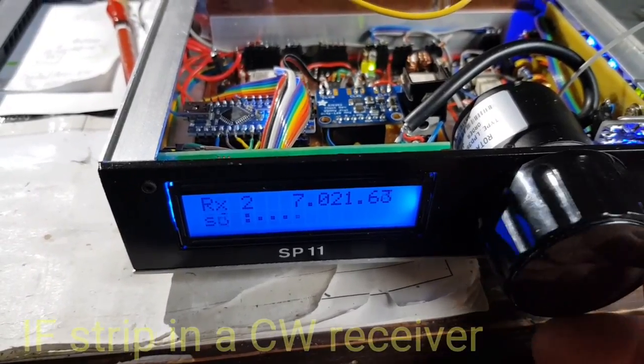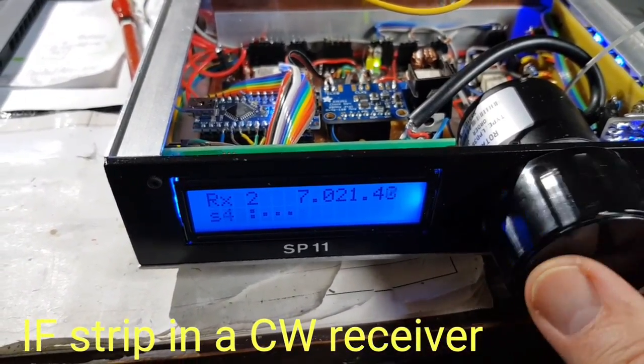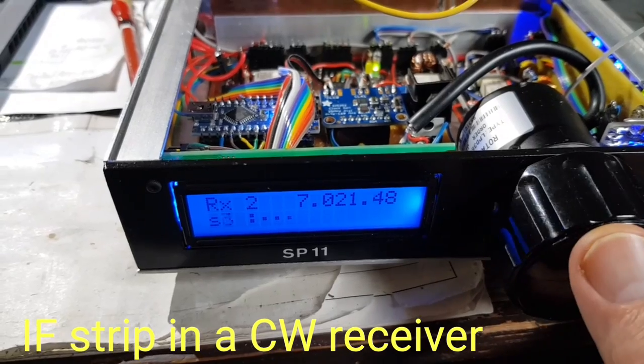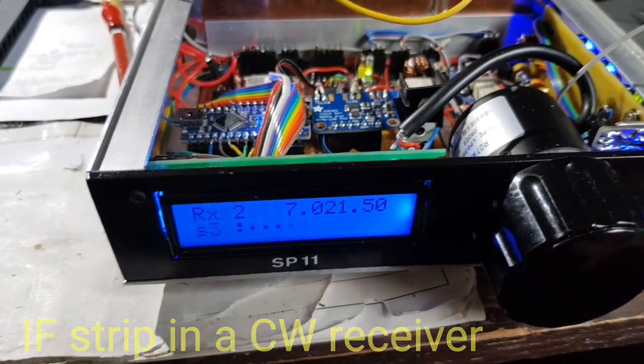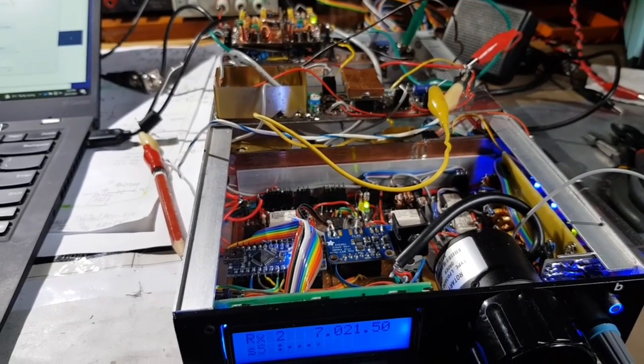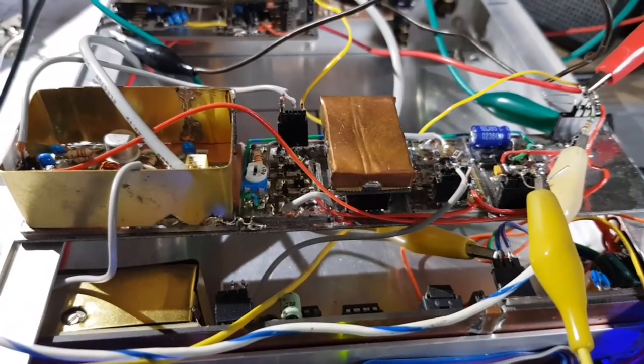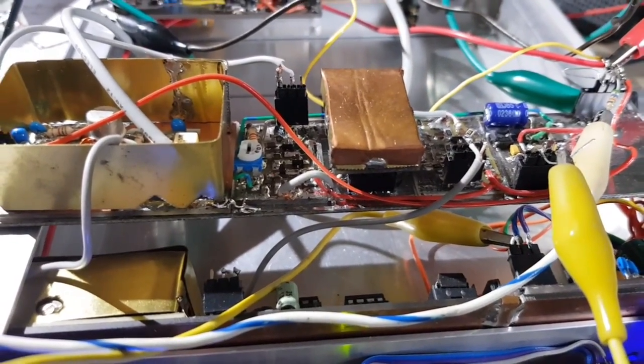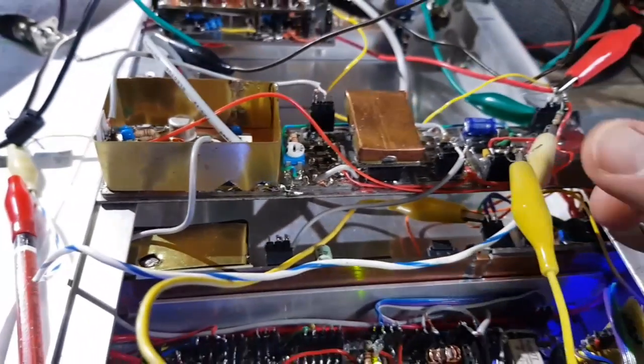So the ultimate test of an IF amplifier with AGC is to build it into a receiver. Here's a project that I've been working on recently. The yellow clip lead is connecting AGC onto the amplifier.